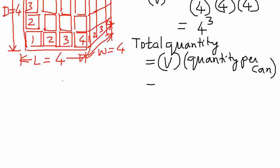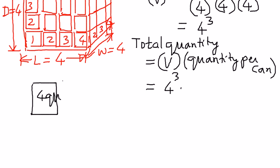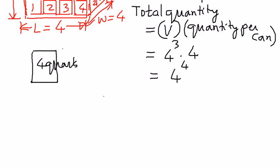The volume is four to the power of three, and each can contains four quarts of milk. Therefore, we multiply that by four. The quantity per can is four, the volume is four to the power of three, and therefore the total quantity can be expressed as four to the power of four.